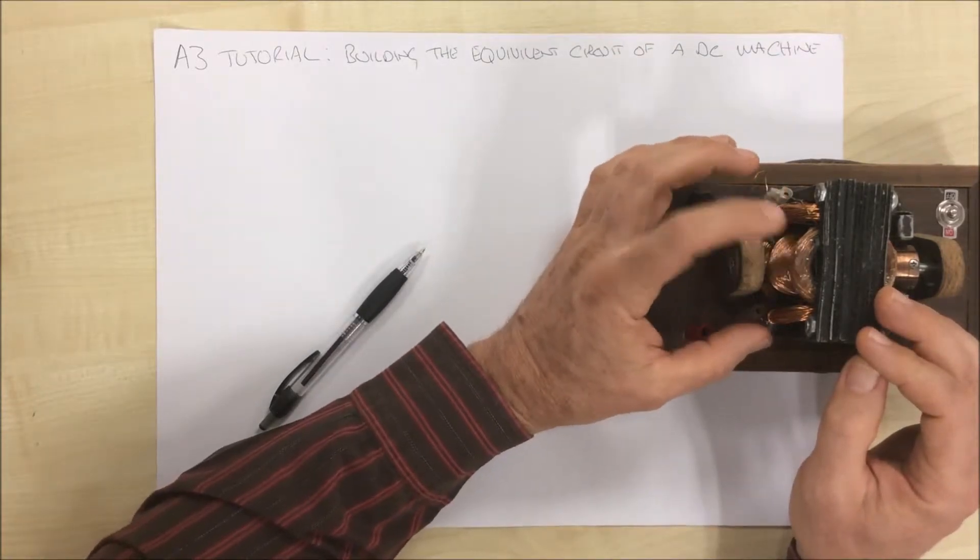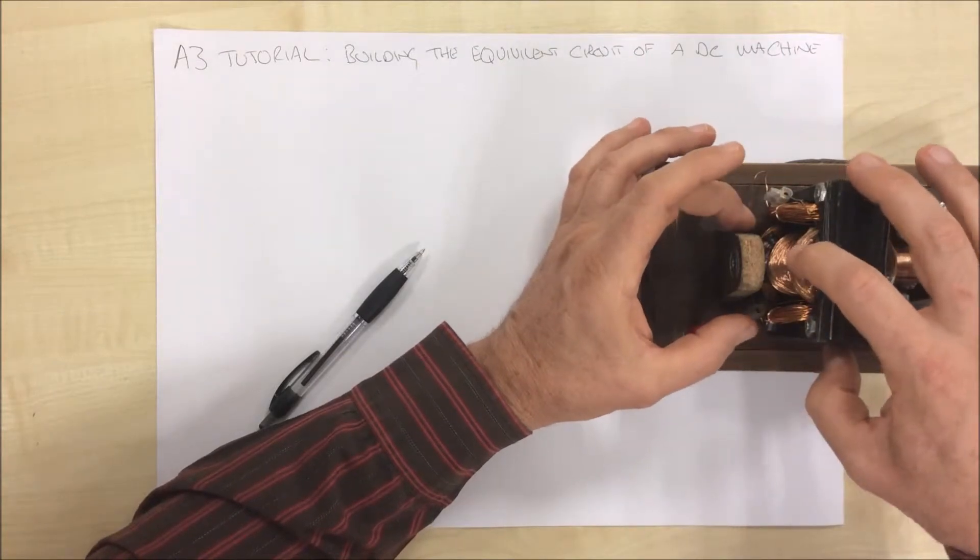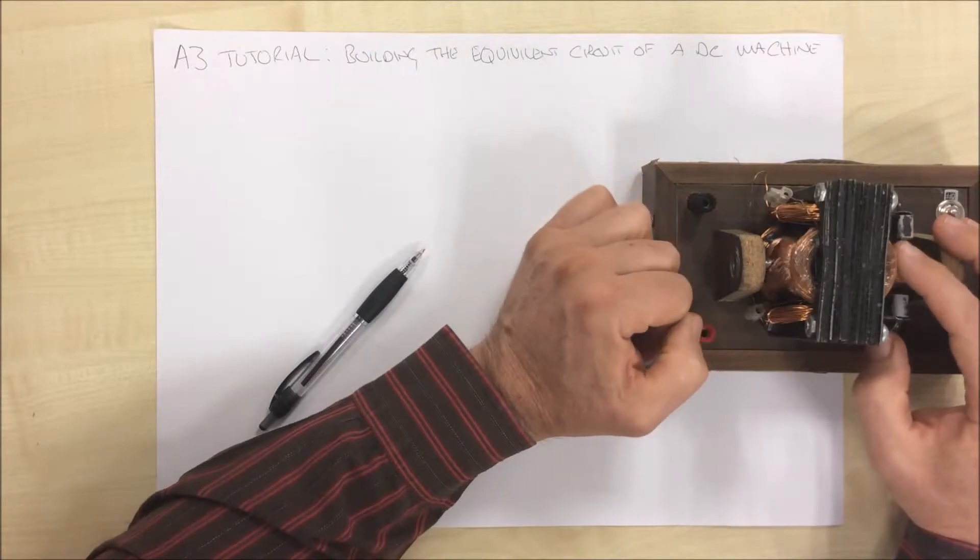Here we've got two lots of field windings. Here's a set of field windings here and here's another set here. And then here we have our armature windings and they're spinning around like this.